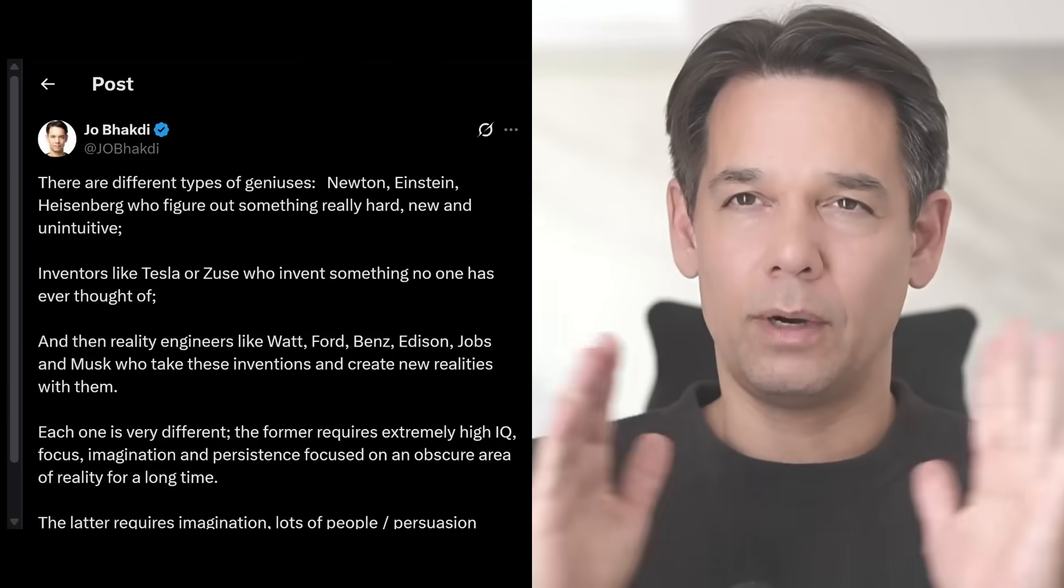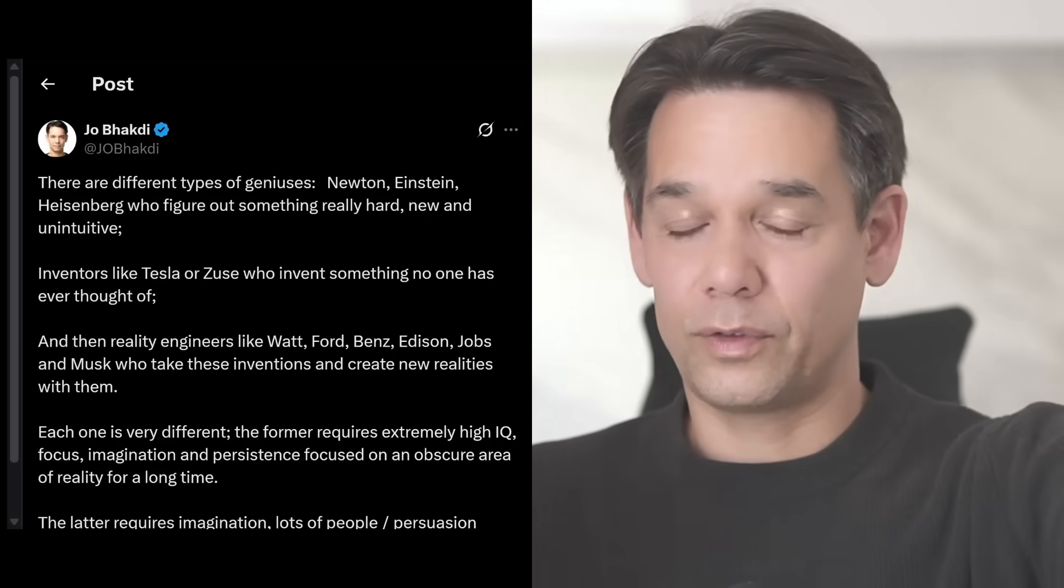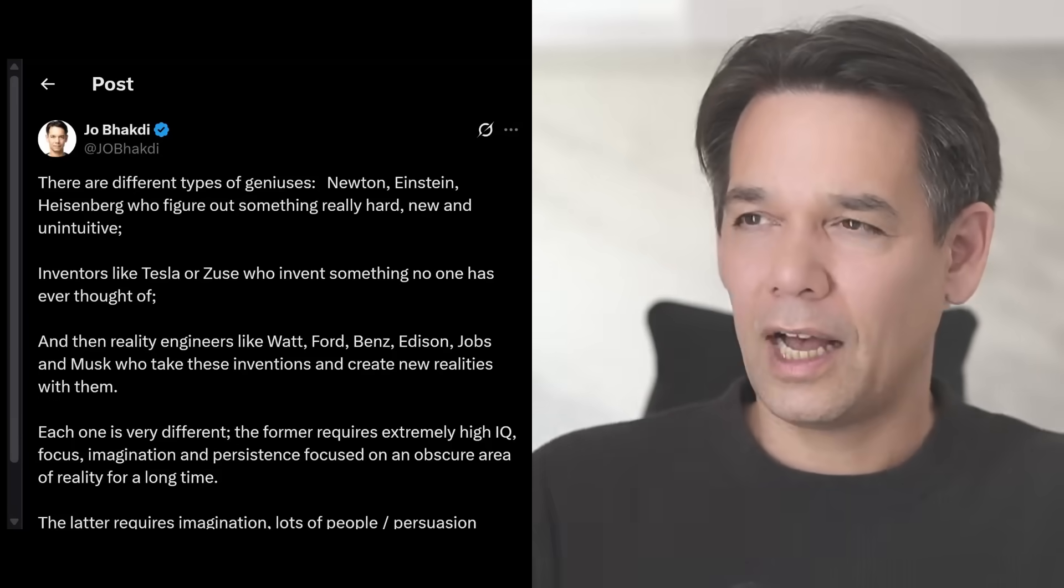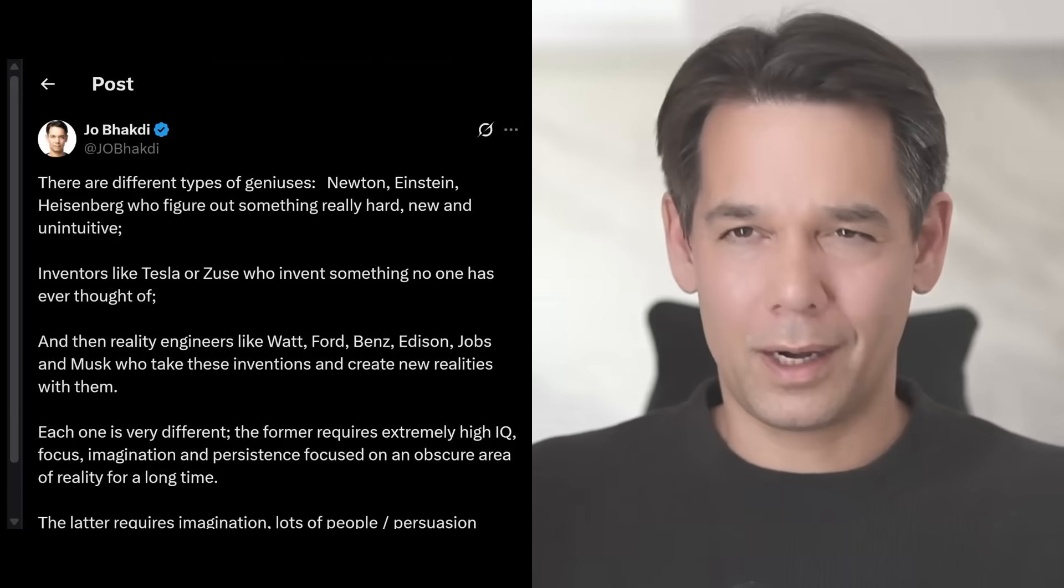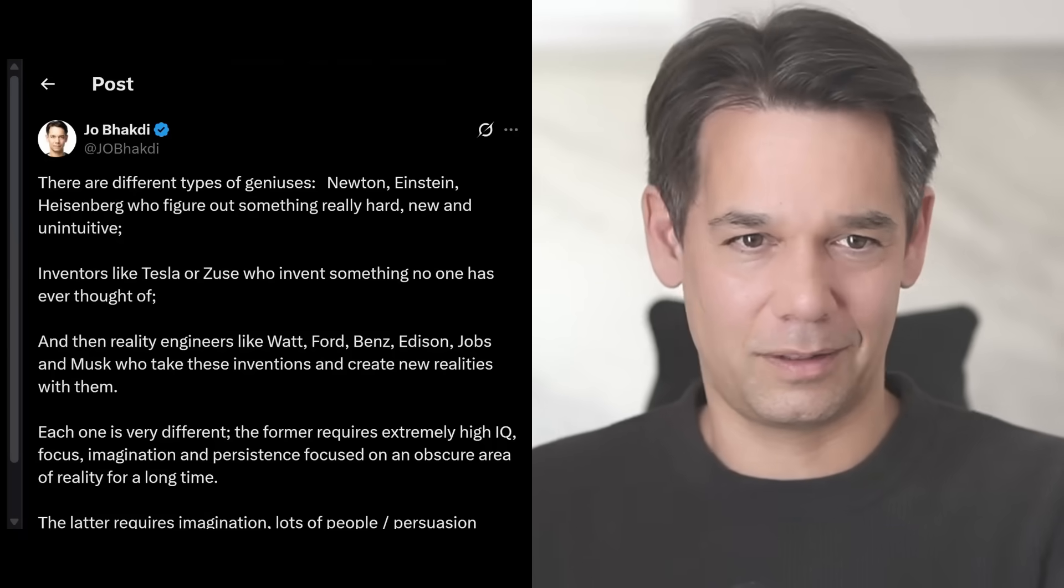And that's also not what Elon does, right? These people go out and say, you know what, when I connect these weird scientific discoveries that the first type of genius does, and I think about the world, I determine that it should be possible to invent a weird machine that does something crazy.